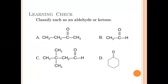Let's classify and name more examples. Example A has a carbonyl carbon coming at carbon two — it's in the middle, so this is a ketone. Numbering from the end closest to the carbonyl: one, two, three, four — this is a 2-butanone.